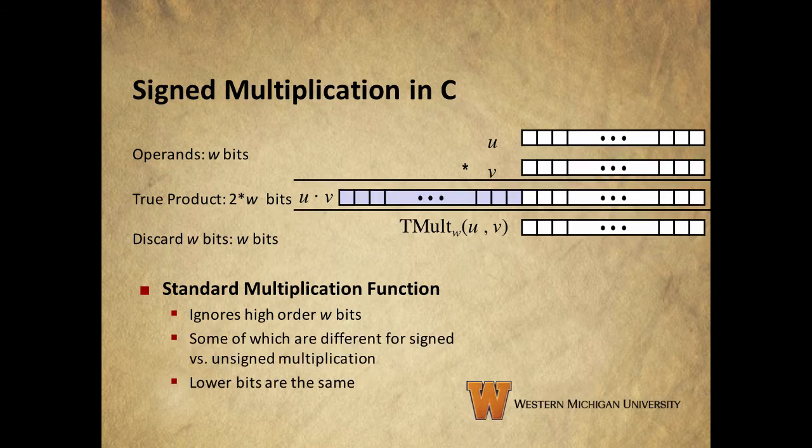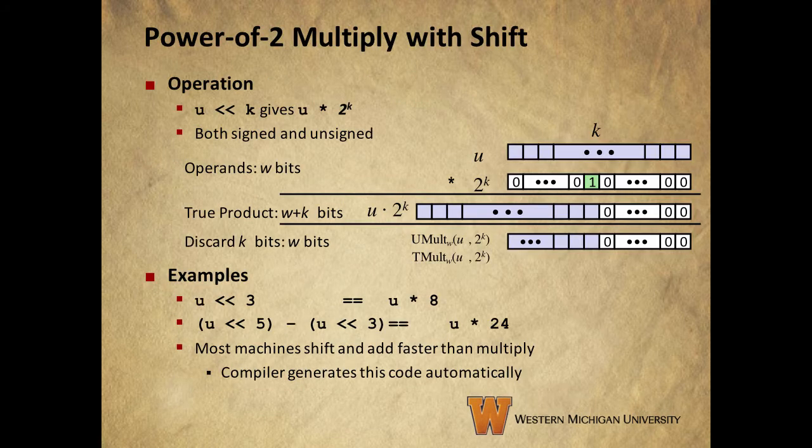Sign multiplication works the same on the bit level. Again, we just discard the bits that overflow and interpret the result as a two's complement number.